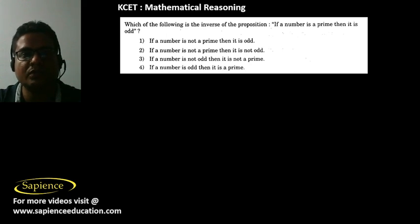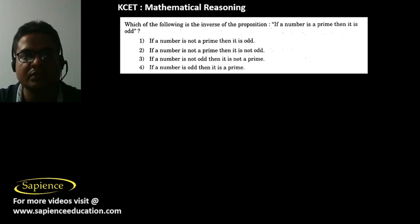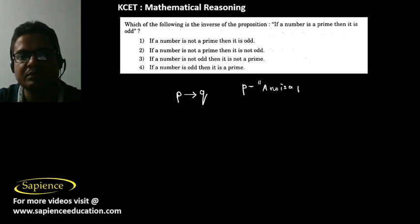The question asks: which of the following is the inverse of the statement 'if a number is prime, then it is odd'? The statement is of the form P then Q, where P is the statement 'it is prime' and Q is the statement 'then it is odd'.